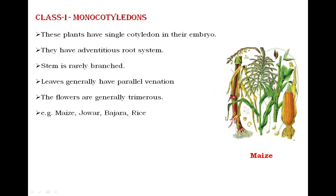The flowers of monocotyledonous plants are generally trimerous — 'tri' means three and 'merous' means petals. Flowers of monocotyledonous plants have three petals, which is why they are called trimerous flowers. Common examples of monocotyledons are all cereals — maize, jowar, bajra, rice, etc.